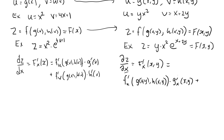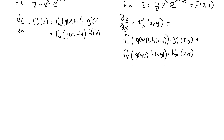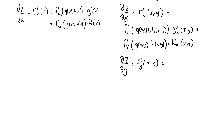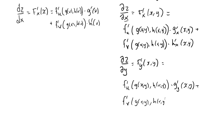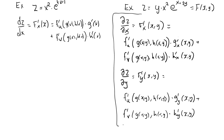x also has an effect on z through the v variable, so we add the partial derivative of f with respect to v, evaluated at g(x,y) and h(x,y), multiplied by the partial derivative of h with respect to x, evaluated at (x,y). We also have a second partial derivative, partial z over partial y. By symmetry: y affects z through u, giving f prime u times the partial of g with respect to y, plus f prime v times the partial of h with respect to y. This is the chain rule we are looking for.